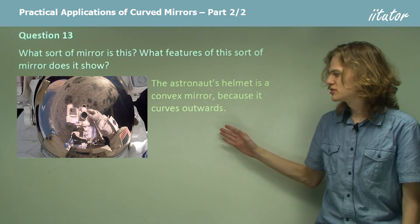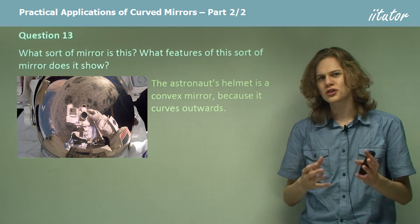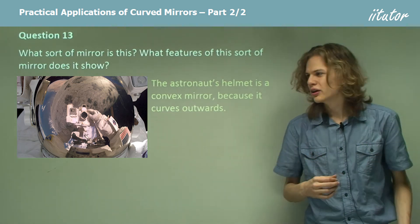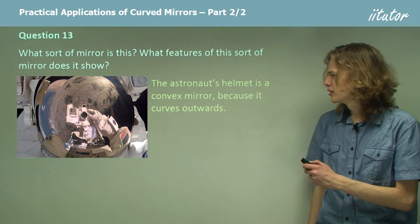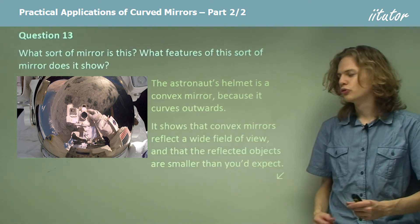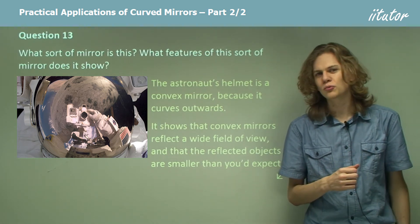Well, let's look at the reflection inside. If we look at the size of, for example, the astronaut's shoulders or arms, they seem quite small compared to what we can see in the rest of the picture. So we can see that convex mirrors will reflect a wider field of view in which the objects seem smaller than they originally were.